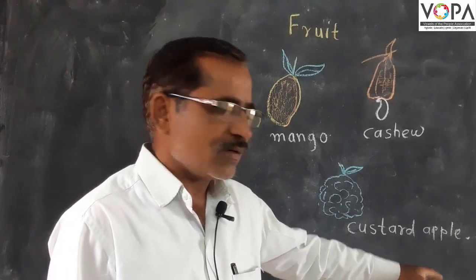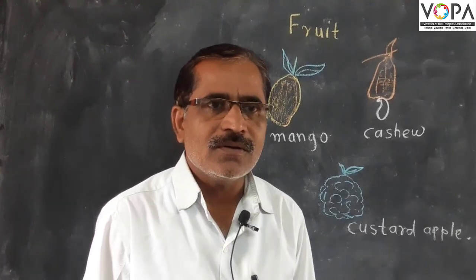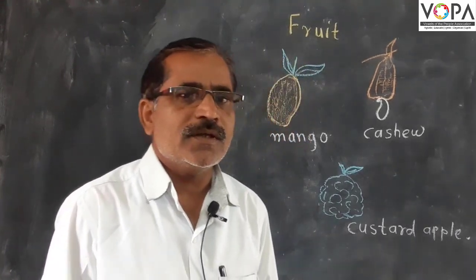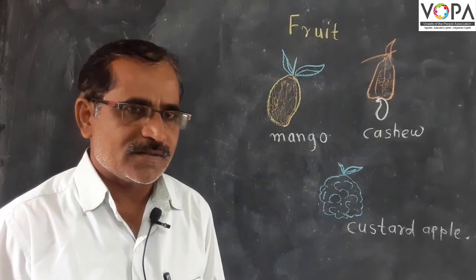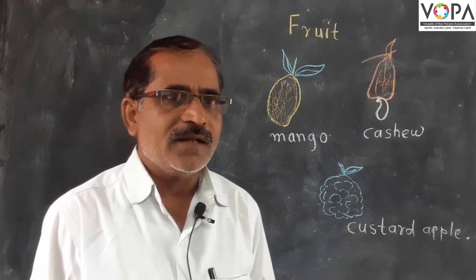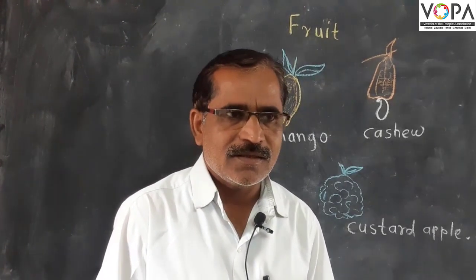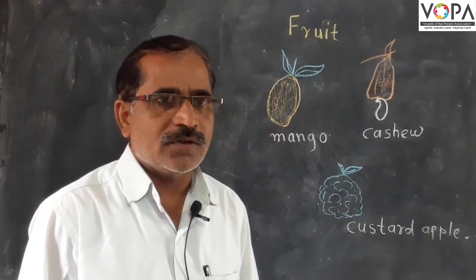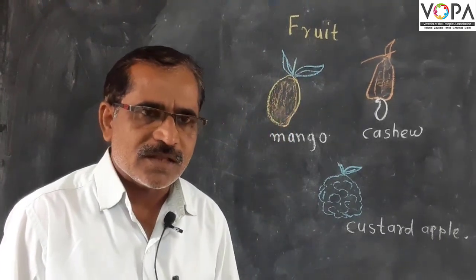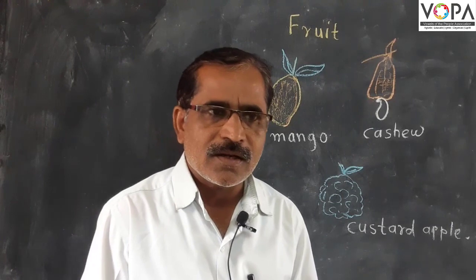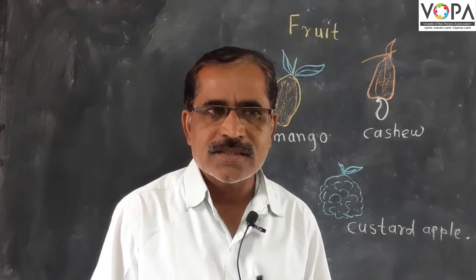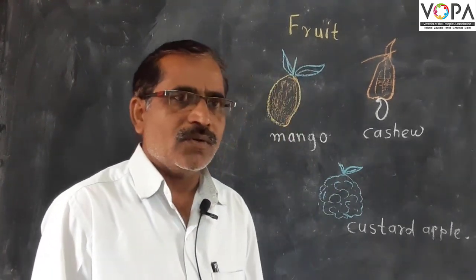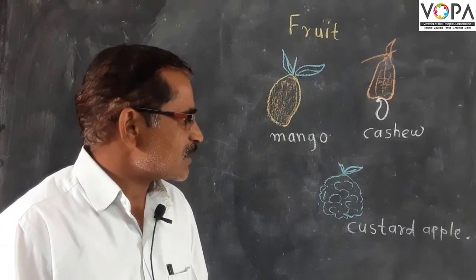An example of a many-seeded fruit is custard apple or jackfruit. In jackfruit there are many fruitlets and many seeds. Fruits differ from each other in their skin, their fleshy part, and their seeds. Some fruits have a single seed and some have many seeds.